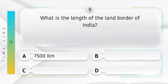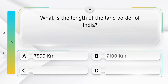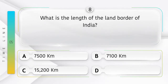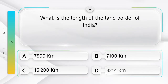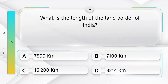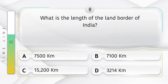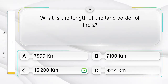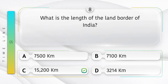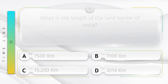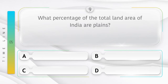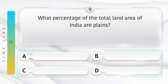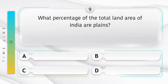What is the length of the land border of India? Option A: 7,500 kilometers, B: 7,100 kilometers, C: 15,200 kilometers, D: 3,214 kilometers. Answer is option C: 15,200 kilometers.